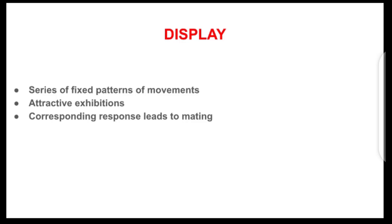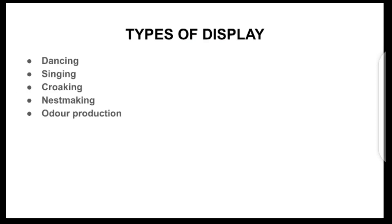Now we'll be looking at some types of display. Types of display include dancing, which we can see in human beings. It also includes singing — birds exhibit singing, and human beings also exhibit singing. You can also see croaking from toads. Nest making can also be a form of display, and there is also the production of odor by the female to attract the male.